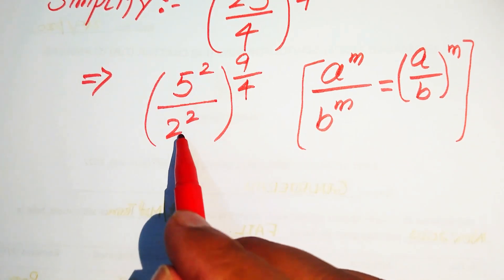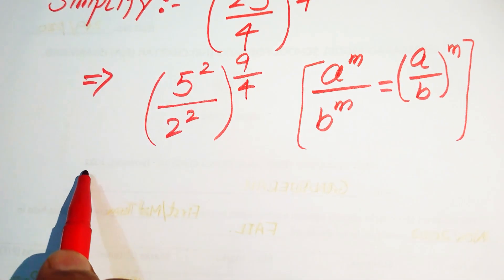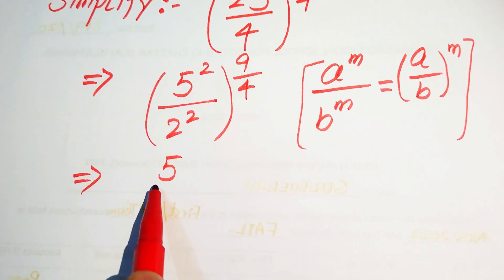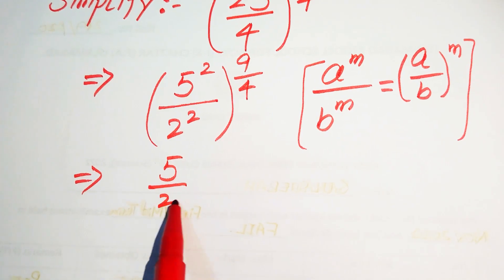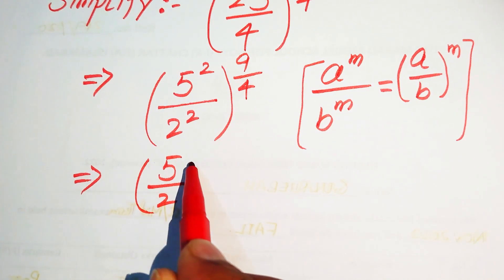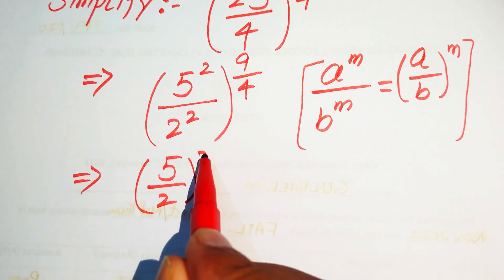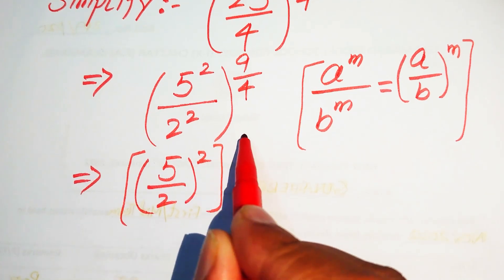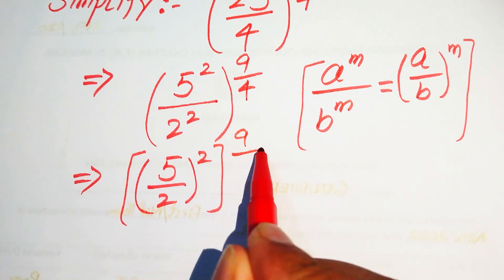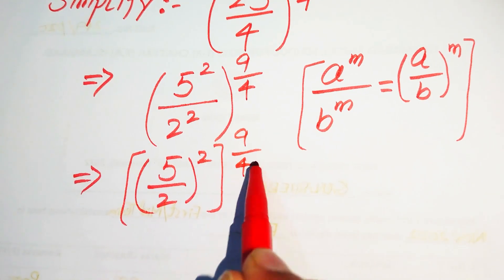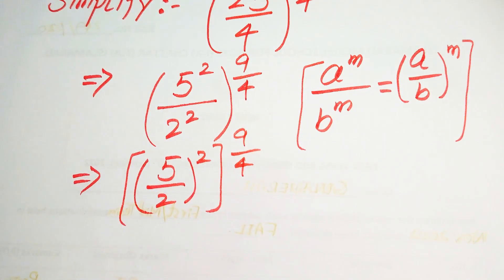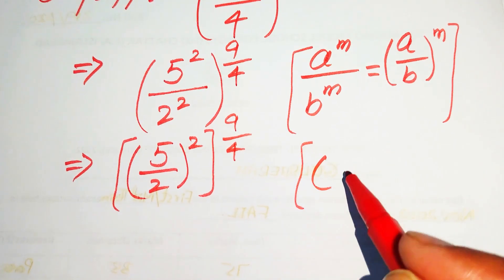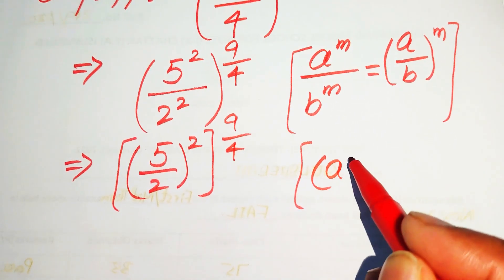According to this law, we combine the exponents of these two terms, and it will be written as 5 over 2, with exponent 2, and whole power 9 divided by 4. After that, we apply another exponential law.